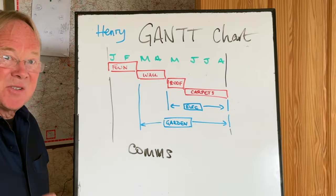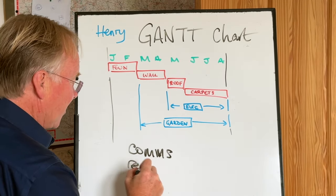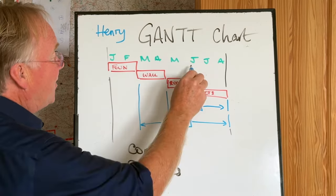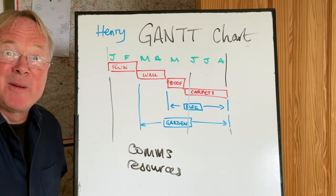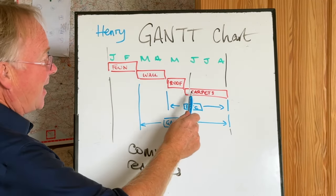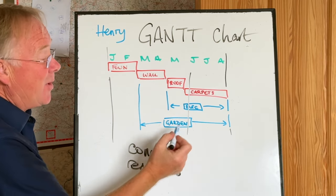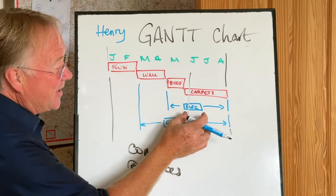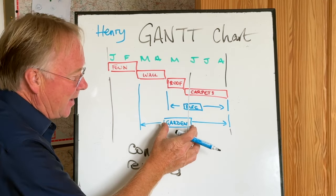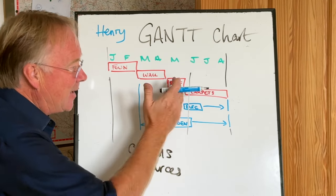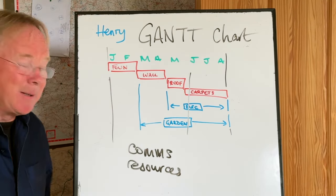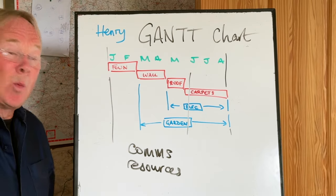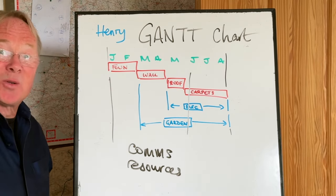The second reason why it's great is you can think about resources. You can look vertically and think, in June we're going to be pretty busy, because we're going to be doing the carpets, possibly the electrical stuff and the garden. But if we move the electrical bit a bit later and the garden a bit earlier, we can get rid of overlaps. So we can see how busy we're going to be well into the future — it's great for resource planning.